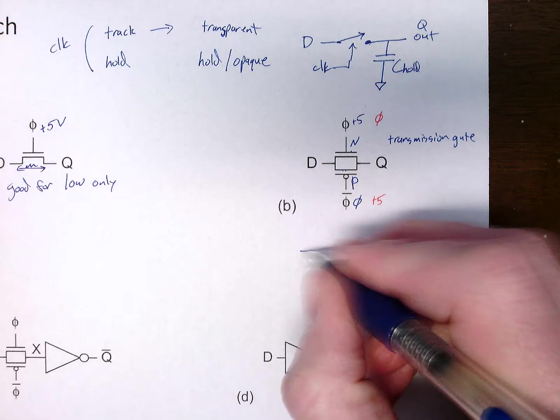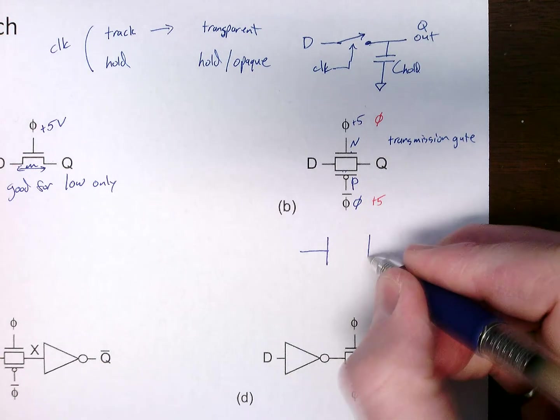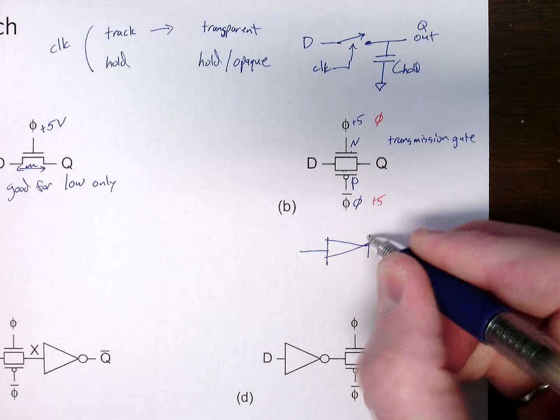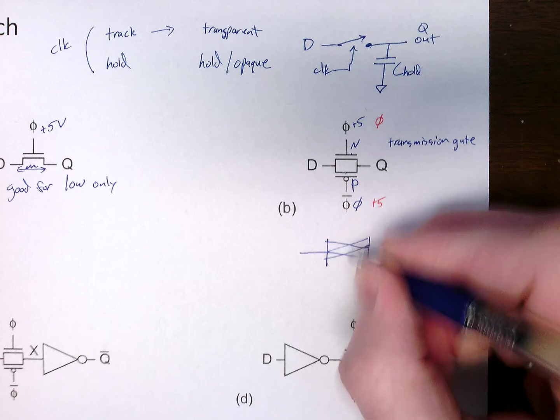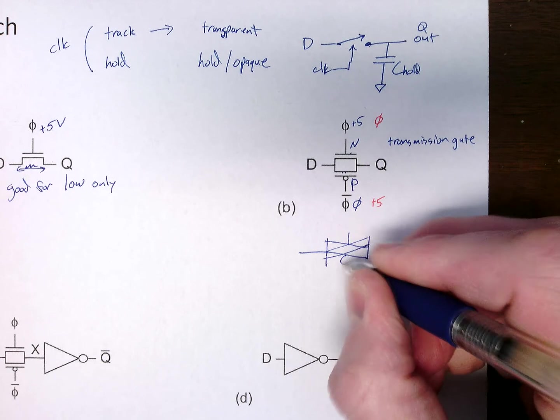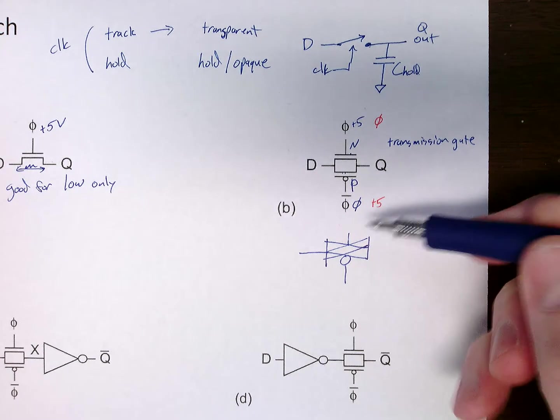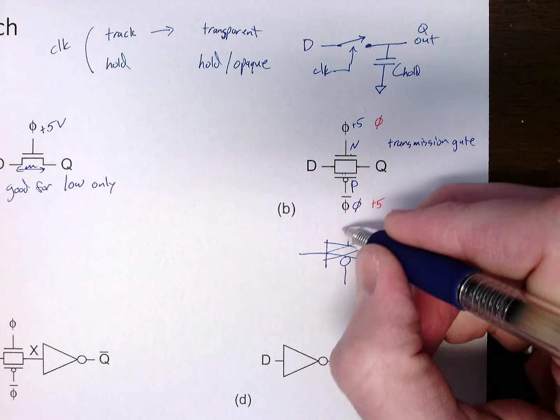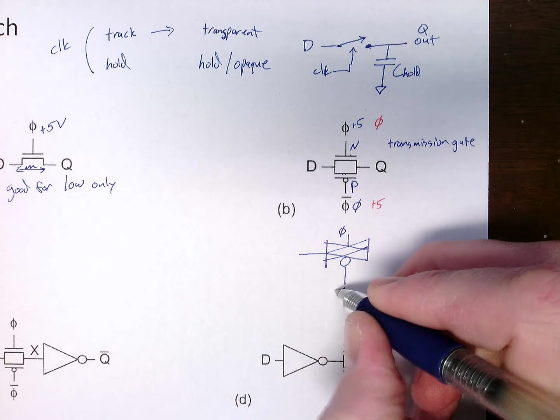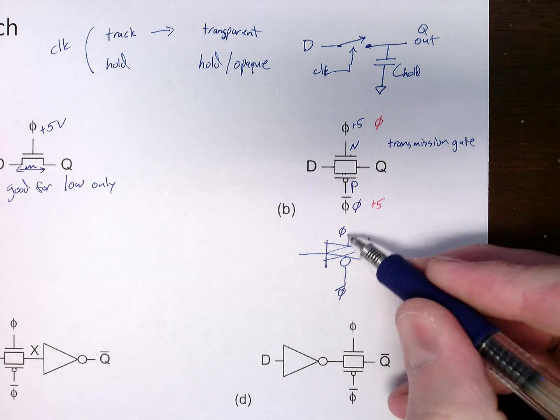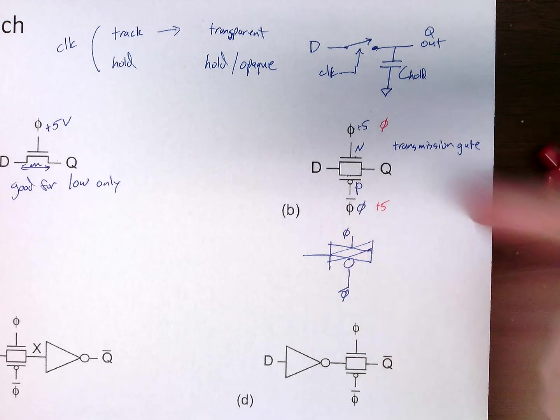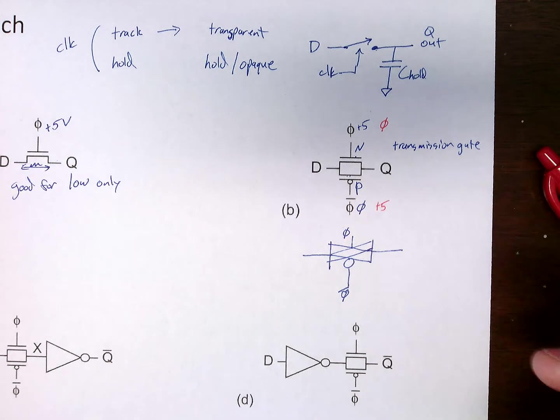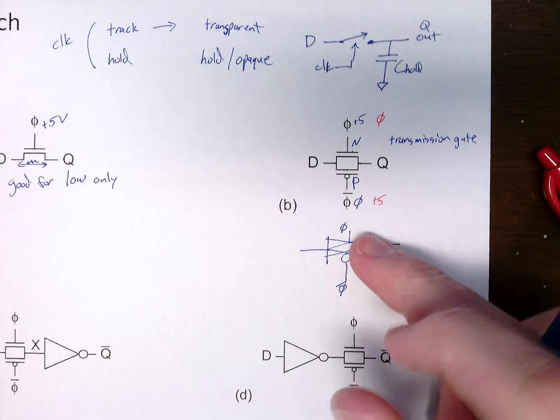So this is our switch. We call this a transmission gate. And it has a symbol, a circuit symbol, that looks like this. It's a little tricky to draw. And here's where our clock, clock signals go. The bubble is always on the PMOS, and the not bubble is on here, and we just have phi and phi bar, or whatever. These are always, these two signals are always equal and opposite for each other. All right, so that's that.